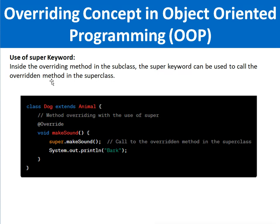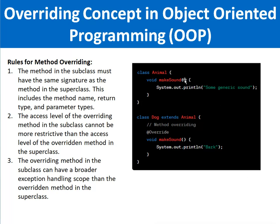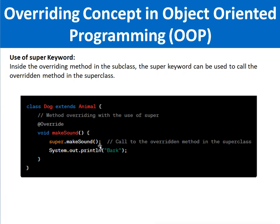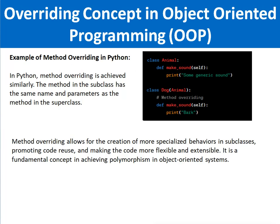Inside the overriding method in the subclass, the super keyword can be used to call the overridden method in the superclass. For example, in the child class Dog which extends from the base class Animal, inside void makeSound we can call super.makeSound(). If we call super.makeSound(), it will call the makeSound method of the base class. So by using the super keyword, you can call the base class method as well.